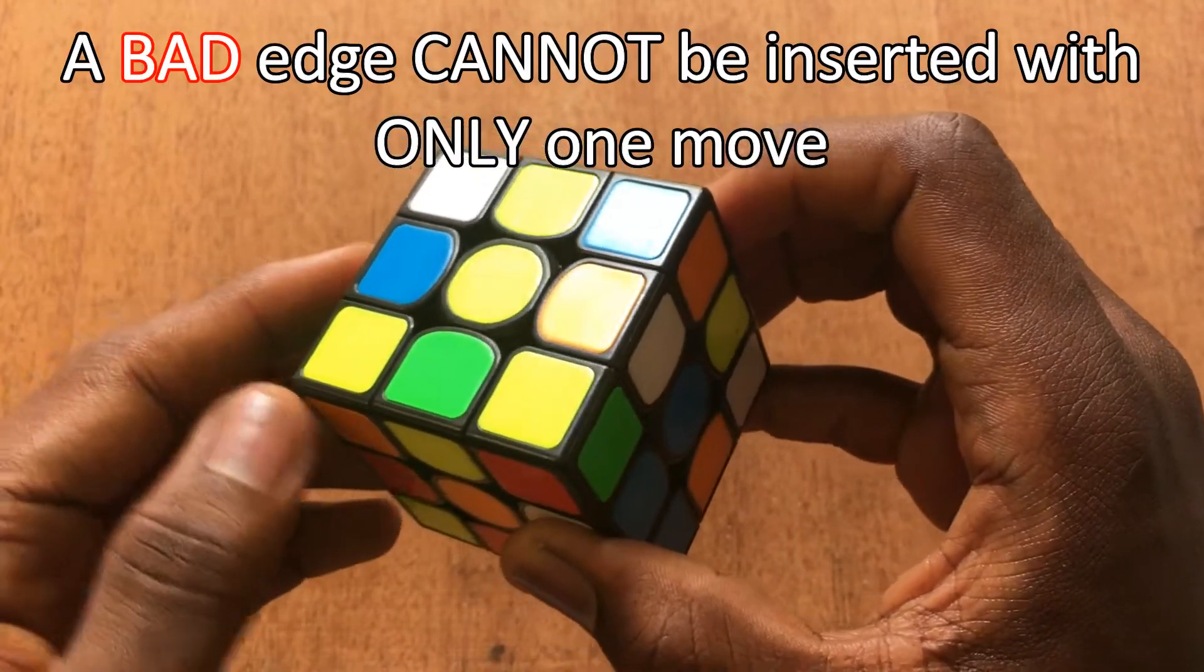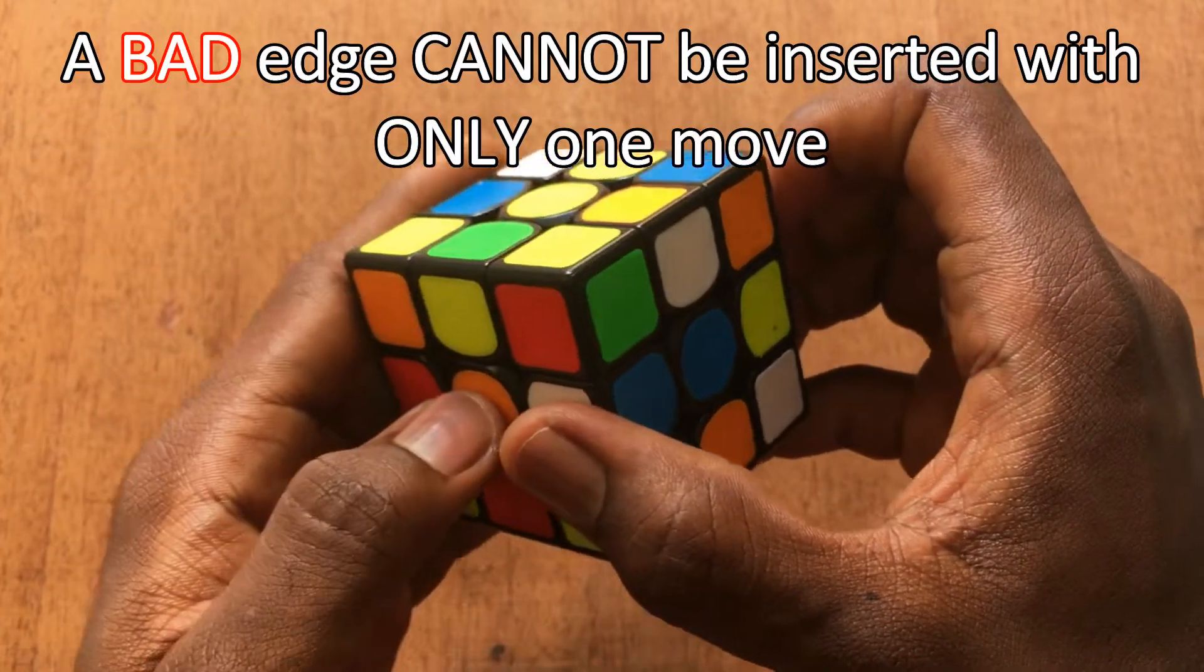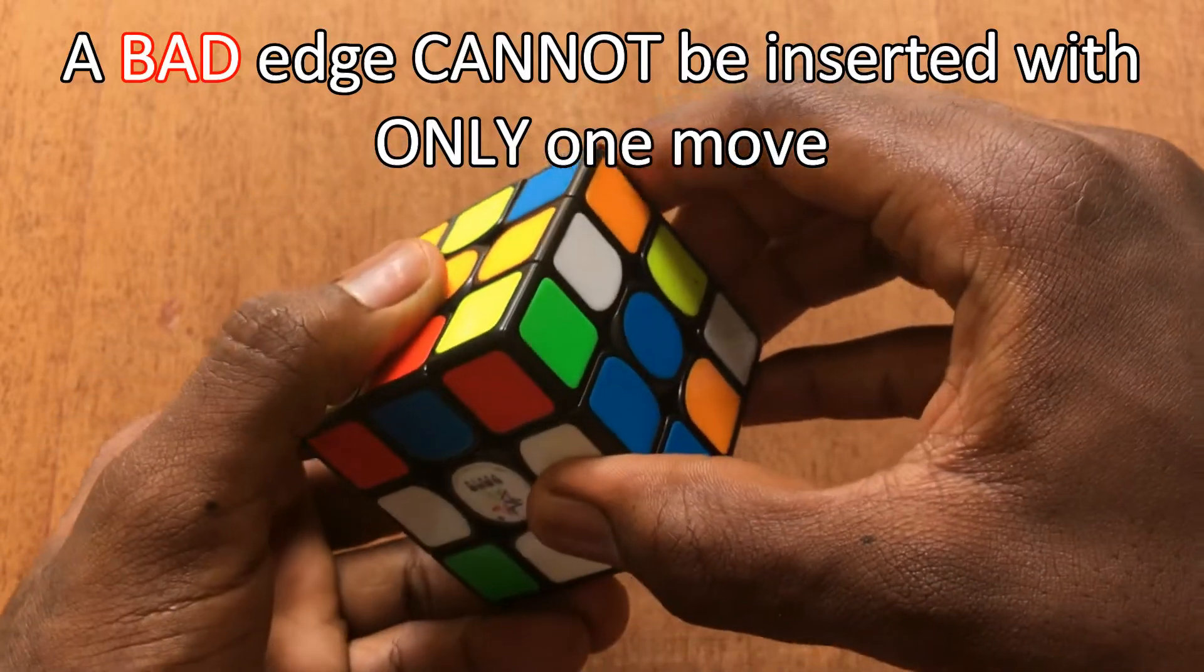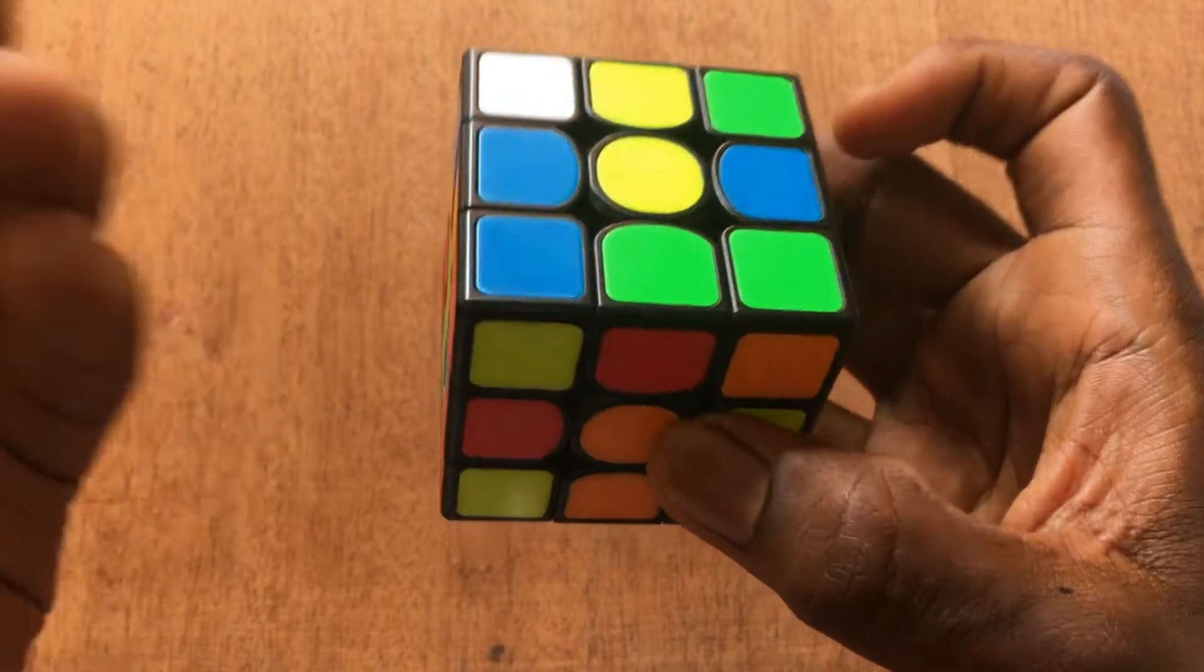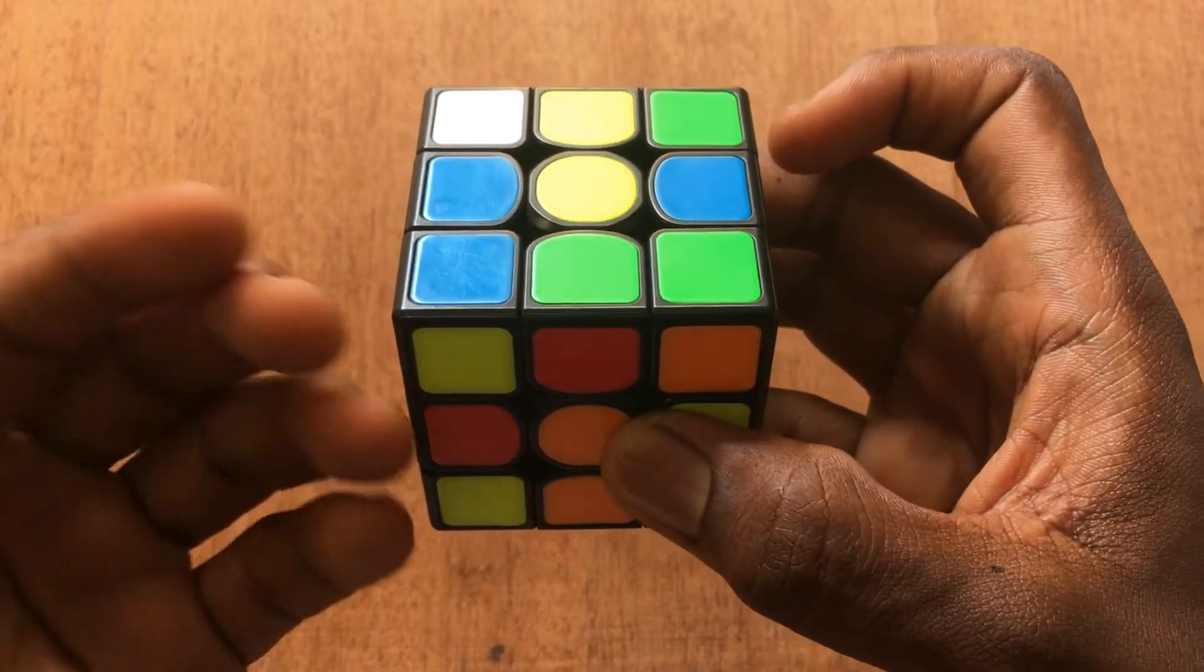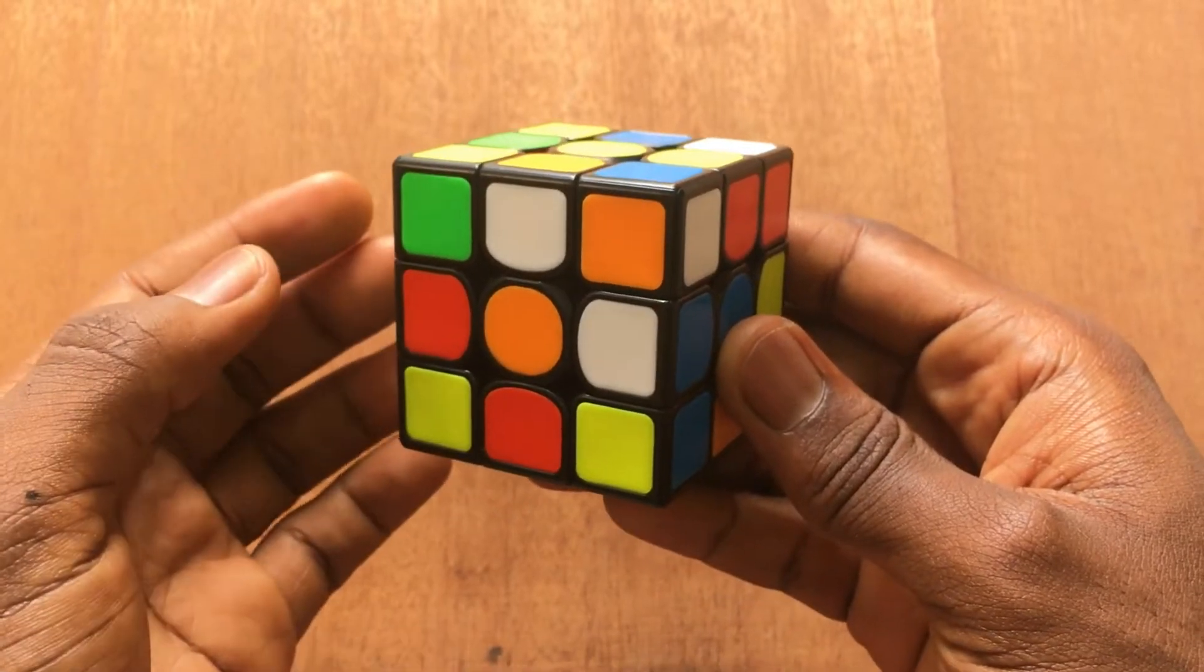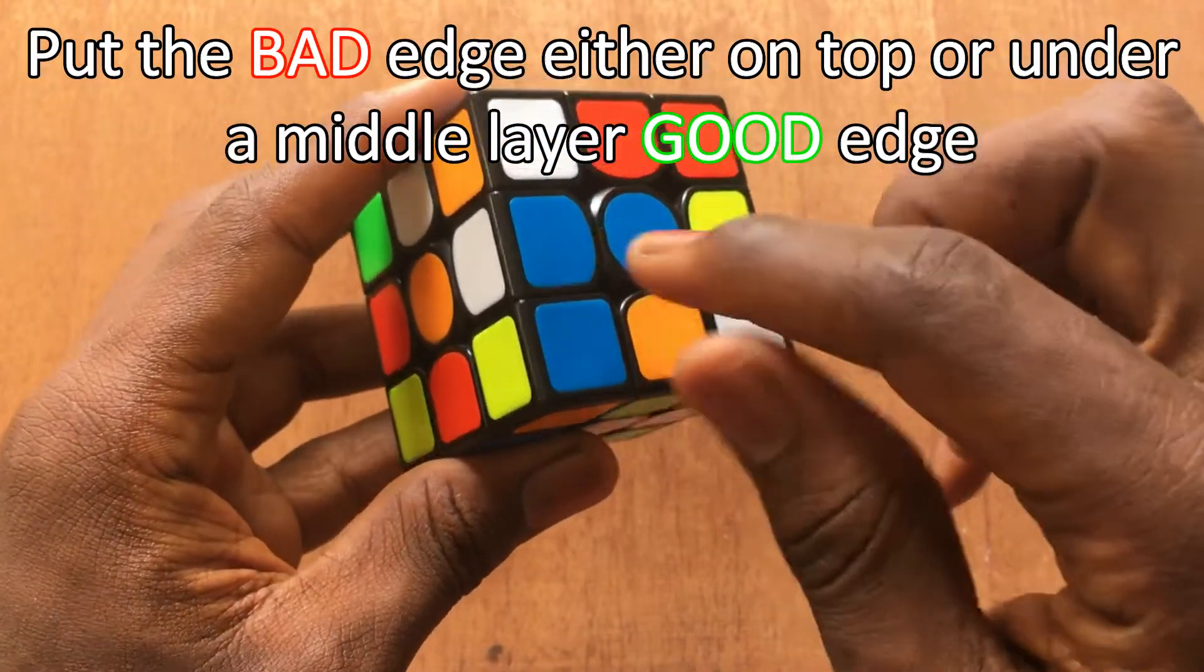In contrast to that, a bad edge is an edge which cannot be solved with only one move. For example, this orange white edge is a bad edge and the only way I can solve this is to bring it to the middle layer and then insert it down to the cross layer. Now the major question becomes how do I deal with these bad edges wisely and there are many methods of doing this. The first and most common method of dealing with bad edges is to put it either on top or underneath a good edge.